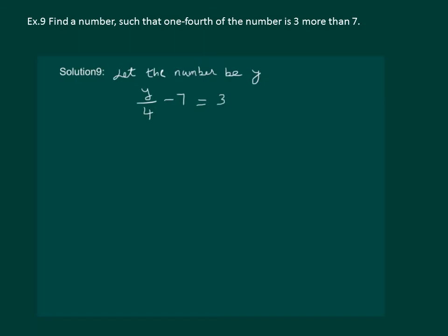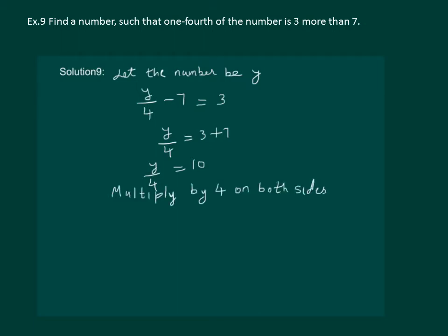Now let us solve this equation. Let us transpose minus 7. We get y by 4 equal to 3 plus 7, or y by 4 equal to 10. Now it remains to remove this 4, which can be done by multiplying by 4 on both sides. This becomes 4 into y by 4 equal to 4 into 10, giving us y equal to 40.